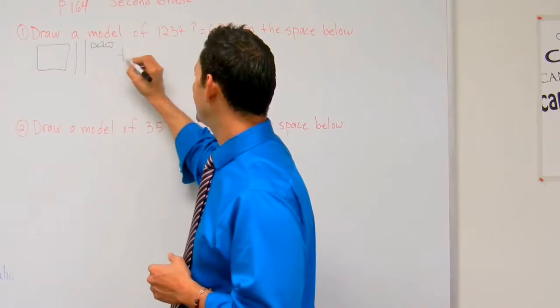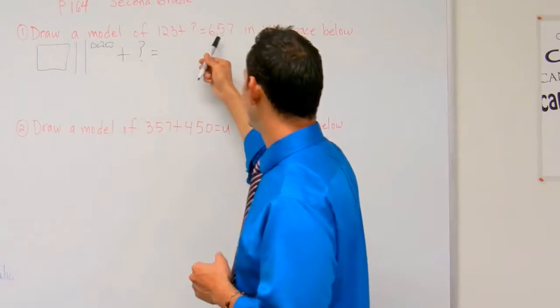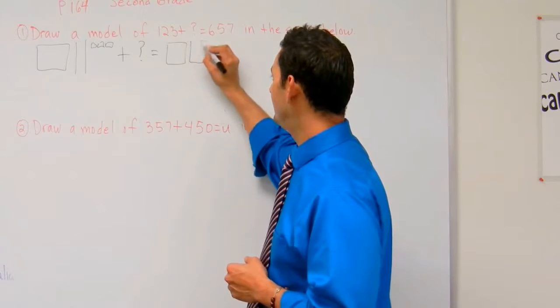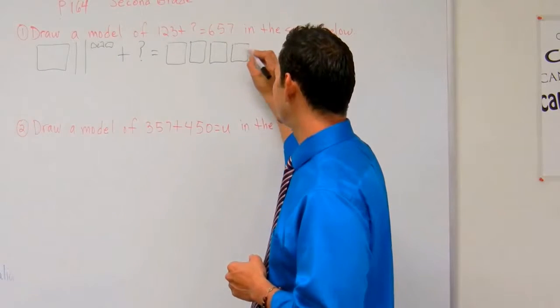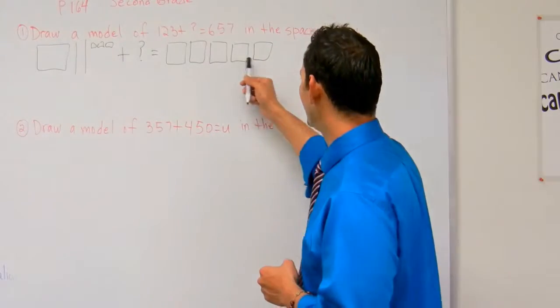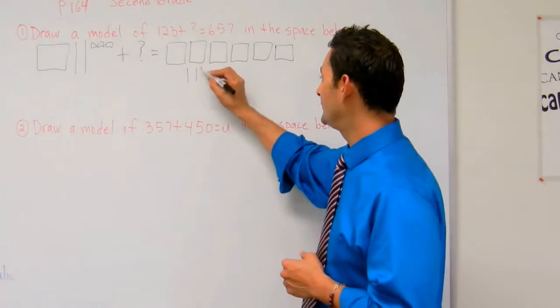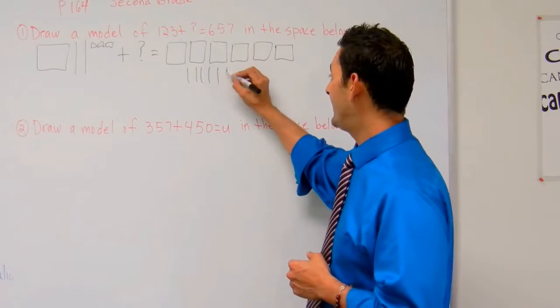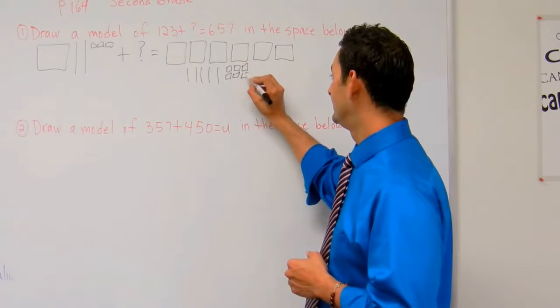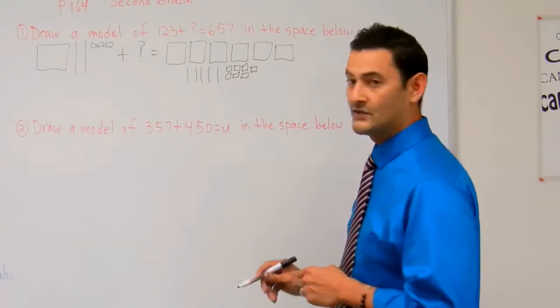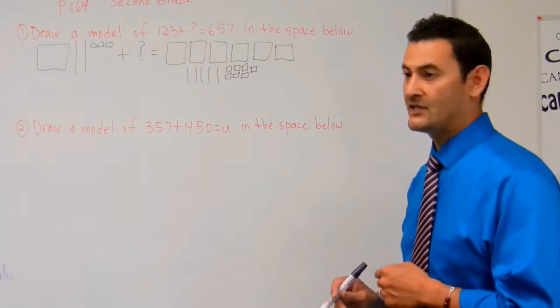Plus something equals... then I'm going to do six blocks of hundreds: one, two, three, four, five, six. Then I've got five bundles of 10: one, two, three, four, five. Then I've got seven ones: six, seven. So that's really what the question is asking you.